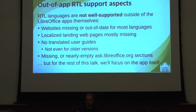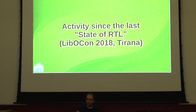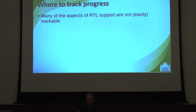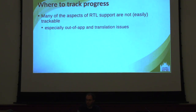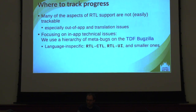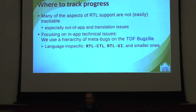After this rant, I'll switch over to the aspect of support that's within the applications themselves, within the different modules — and also drop the negative tone, because within the application things are better and improving, certainly not perfect. Let's talk about what happened over the past four years. Where you can track this progress yourselves: some aspects are not trackable, especially those not within the applications. But for in-application technical issues, they are tracked on the Document Foundation's Bugzilla, and there are several metabugs — RTL and CTL. RTL is for right-to-left, CTL is for complex text layout, and there's also RTL-UI.